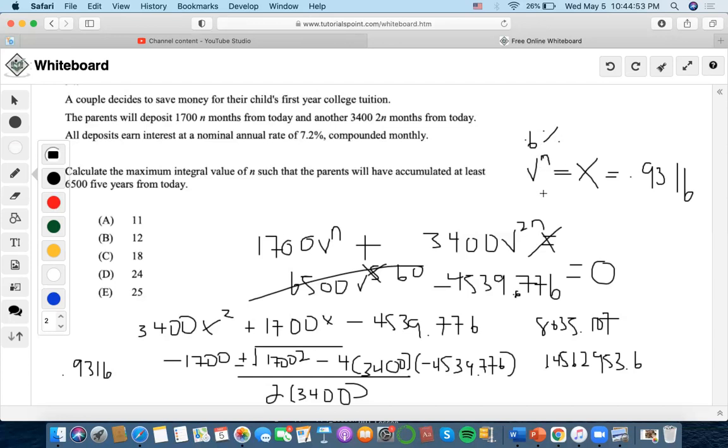We know that X equals 0.9316. Now we can find N given the effective rate of 0.6%. We're going to do 1.006 to the negative N equals 0.9316.